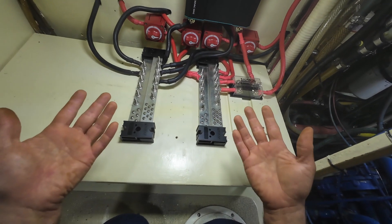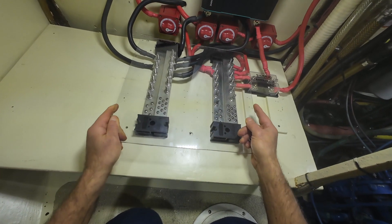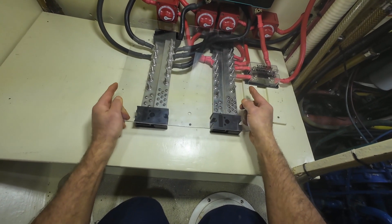So I made my own. This is just a sheet of Lexan, I think, and I cut it to fit right over the bus bars.